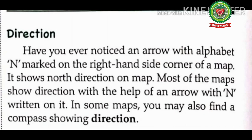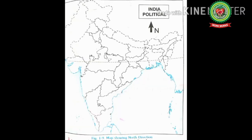Now let's start reading. Have you ever noticed an arrow with alphabet N marked on the right hand side corner of a map? It shows the north direction on the map. Most maps show direction with the help of an arrow with N written on it. Now look at the map of India — you can see an arrow drawn and marked N, indicating the north direction. At the bottom of north is south, to the right is east, and to the left is west.